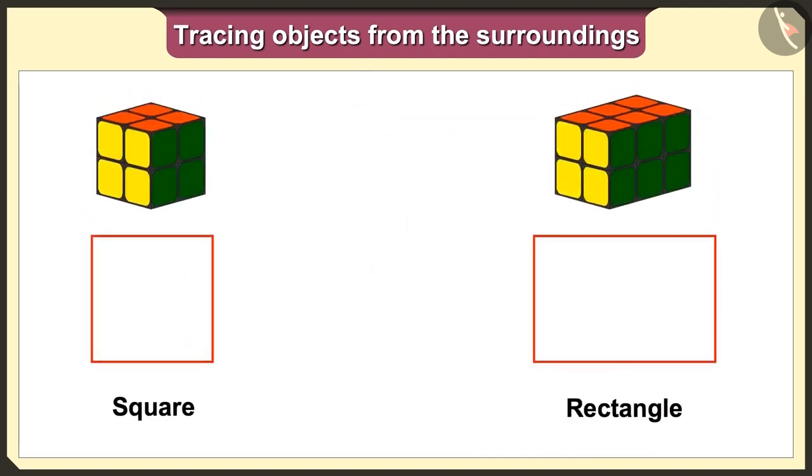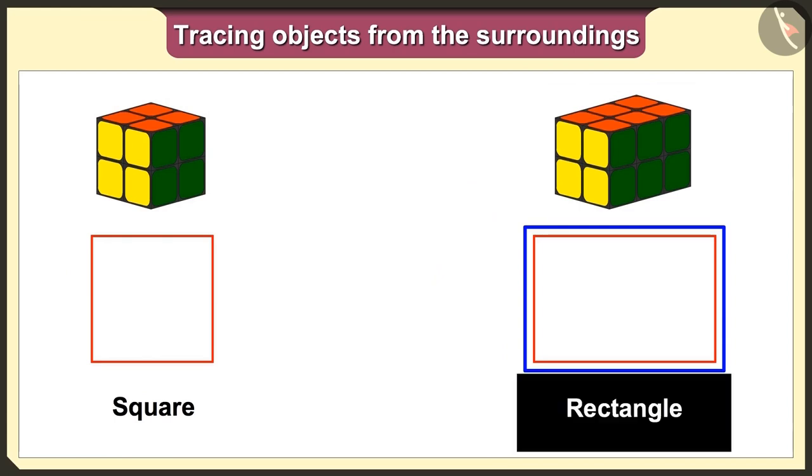Yes, now I understand it very well that the shape we get when we trace the cuboid is not a big square, but it is a rectangle.